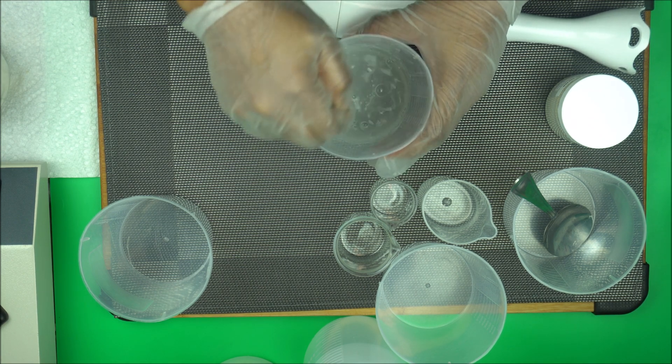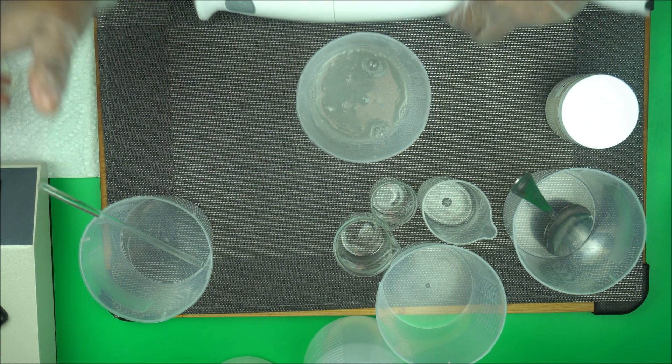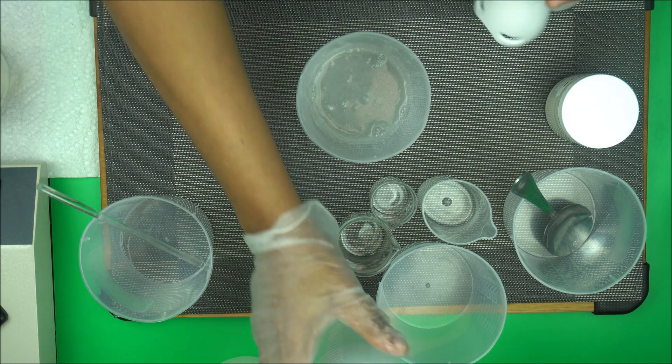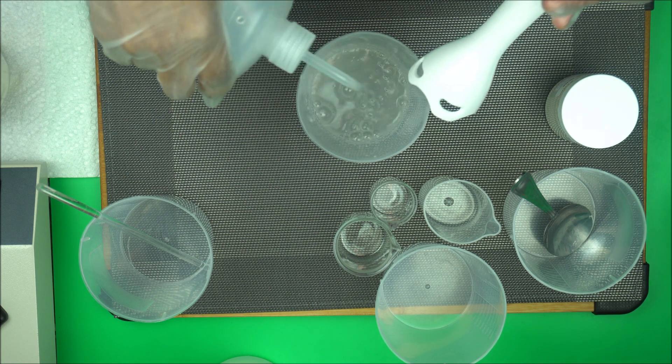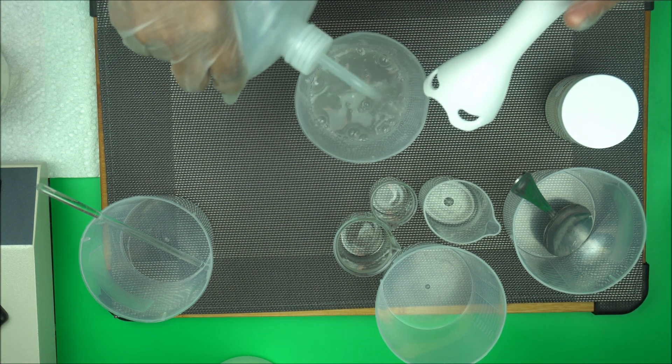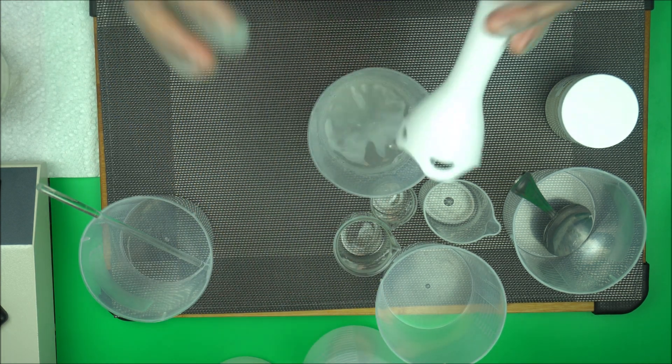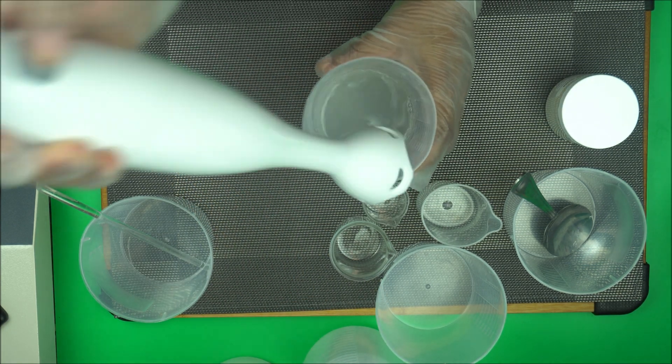It's more soluble in water than xanthan gum. It's not as stubborn as xanthan gum is, but you want it to fully hydrate. As you can see here, to make a smoother texture, use your immersion blender. Any brand you have is okay.